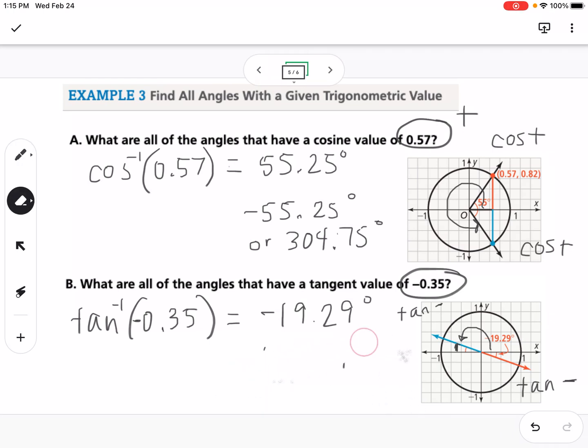That would be 160.71. Okay. So hopefully that makes sense. You find the first one using the calculator and then you're going to ask yourself where is that trig function, so sine, cosine, tangent, either positive or negative.